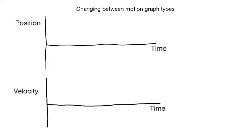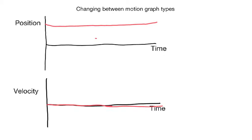Let's try an easy one first. Let's say our position versus time graph is a horizontal line, and we want to figure out what the velocity versus time graph is. If the position versus time graph is a horizontal line, then as time goes by the position value doesn't change. So what is an object doing if its position doesn't change? It's just sitting there — holding still. That means our velocity would be zero all the way across.